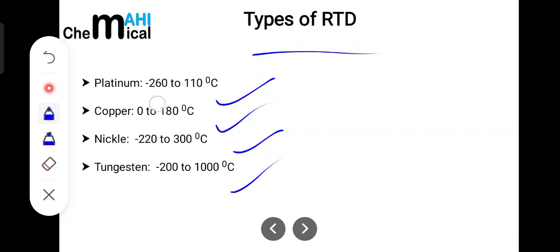Like platinum is used in the temperature range of minus 260 to 110 degrees centigrade, copper 0 to 180 degrees centigrade, nickel minus 220 to 300 degrees centigrade, and tungsten minus 200 to 1000 degrees centigrade. This selection fully depends upon the temperature where you are going to use it. For platinum at 0 degrees centigrade, it has a resistance of 100 ohms, and as the temperature increases, this resistance value also increases.